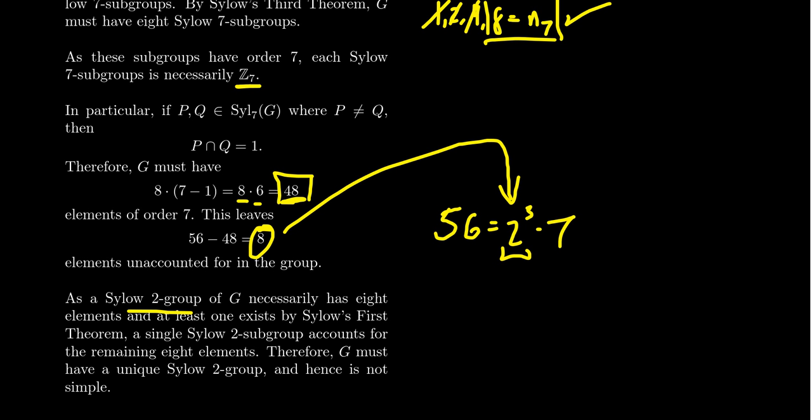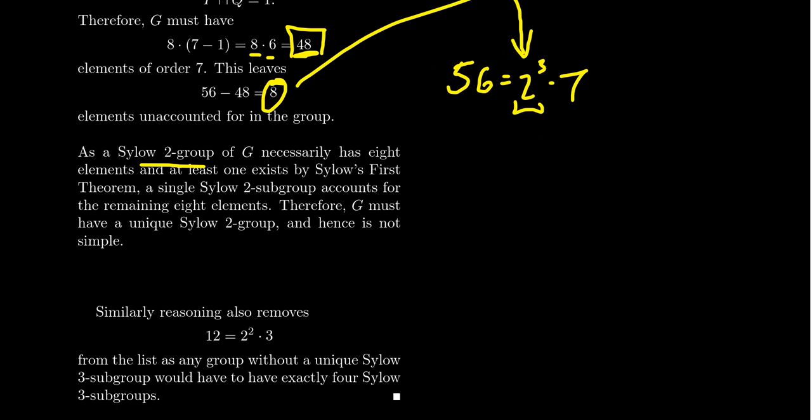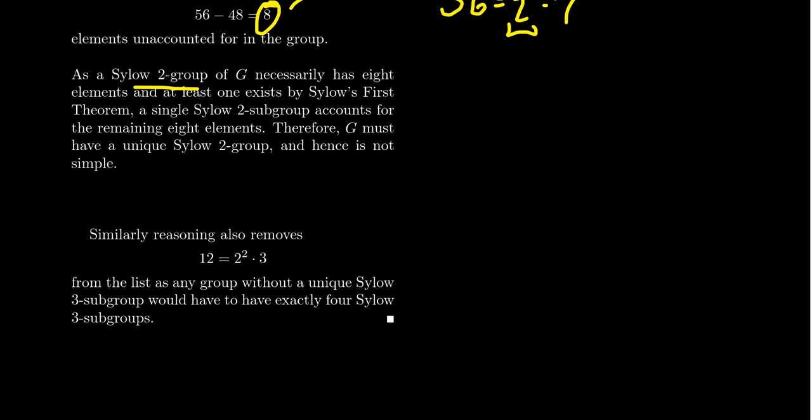So by forcing us to have multiple Sylow 7 subgroups, it then forces that we have a unique Sylow 2 subgroup. So if you're a group of order 56, you either have a unique Sylow 7 subgroup or you have a unique Sylow 2 subgroup. You have to have one or the other. You could have both. Maybe you're like the cyclic group of order 56, but you're going to have to have one or the other.